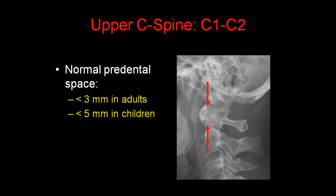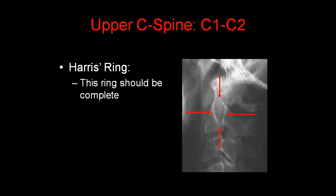In terms of the upper cervical spine, it's very important to look at the C1-C2 relationship. The normal pre-dental space is the space between the anterior arch of C1 and the anterior aspect of the dens. This space is less than 3 mm in adults and less than 5 mm in children. Always look at Harris' ring — a ring superimposed over C2 that should be complete. If it's incomplete, suspect a fracture.